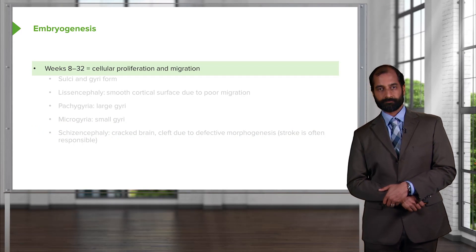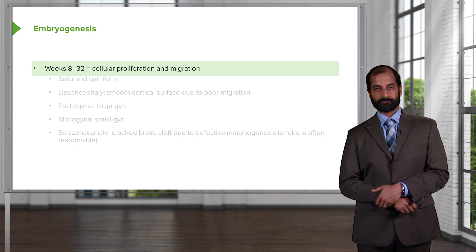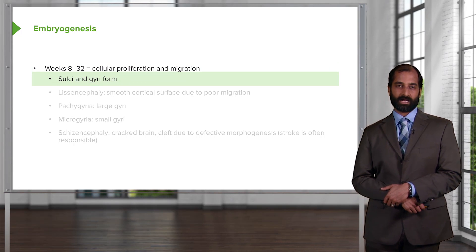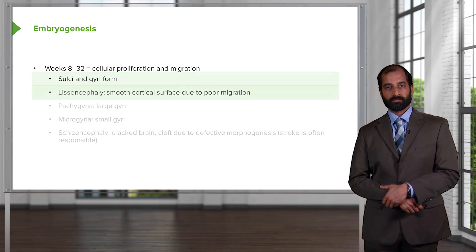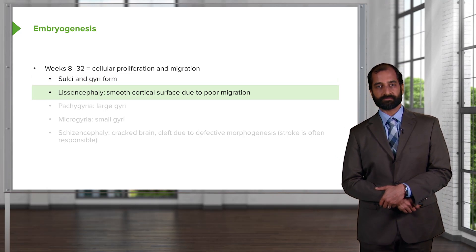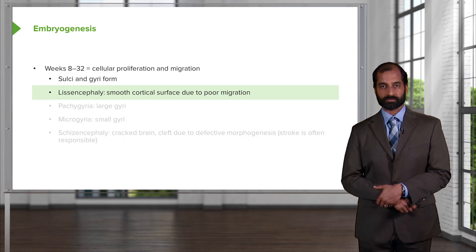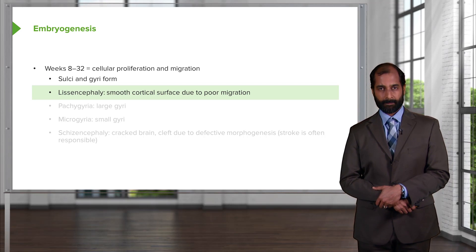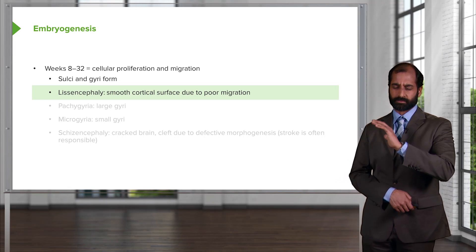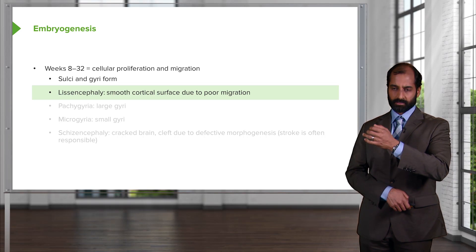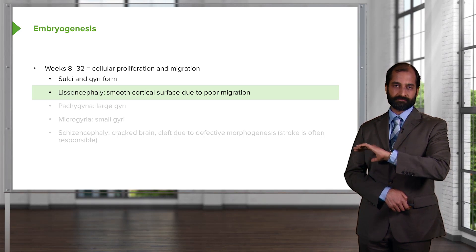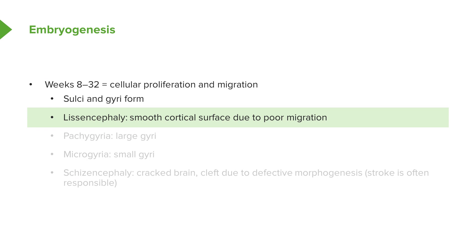From weeks eight to 32, we have cellular proliferation and migration. This is when the sulci — the crevices or cavities between the gyri — and the gyri themselves are forming. A condition called lissencephaly means a smooth cortical surface due to poor migration. If you don't have the crevices and partitions between the gyri, you end up with a smooth cortical surface — that is the pathology called lissencephaly.